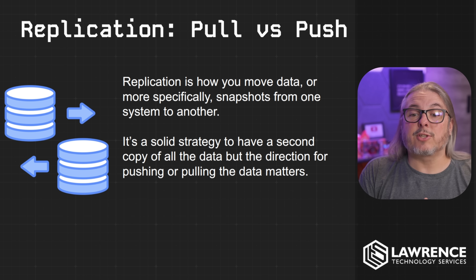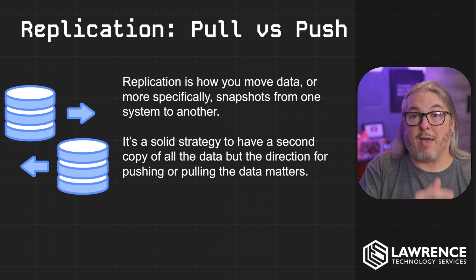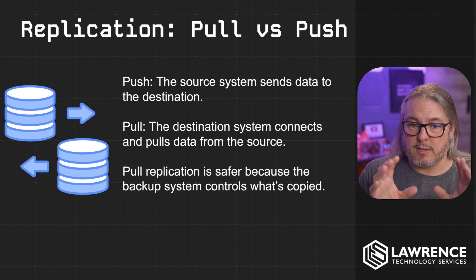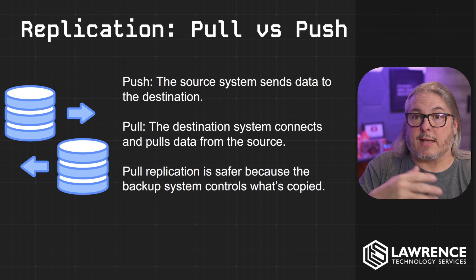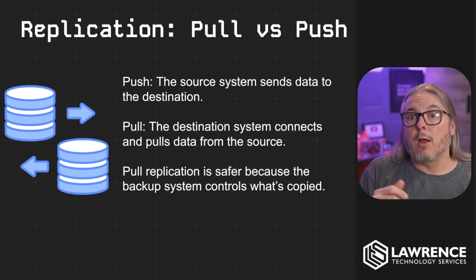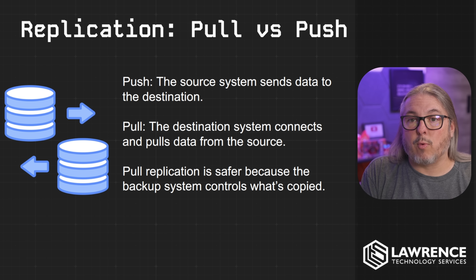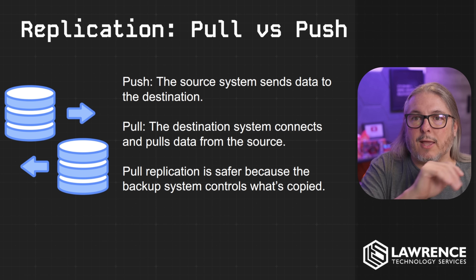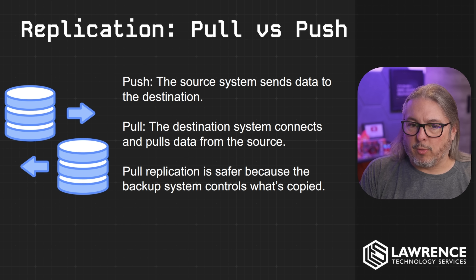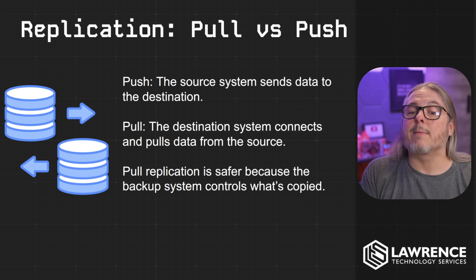Now let's talk replication. Replication is how you move data — more specifically in this context, snapshots — from one system to another. Having all the snapshots on your primary NAS is great; having them on another one is even better. It's a solid strategy to have a second copy of all the data, but the direction for pushing or pulling the data matters. Push is when the source system sends data to the destination — the source has a policy set, has credentials to log into that system, sends the data, and is also setting policies like how long they should be retained. So if you're doing 24 hourly snapshots a day and expiring them after seven days, that same retention policy might be pushed through the replication as well.